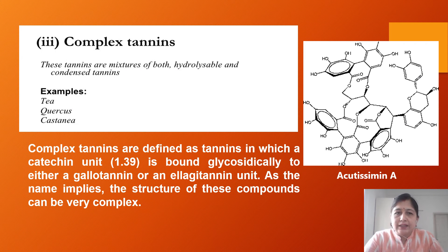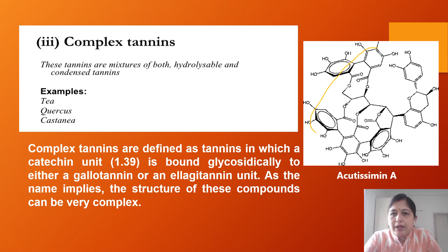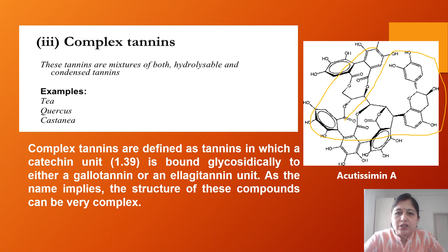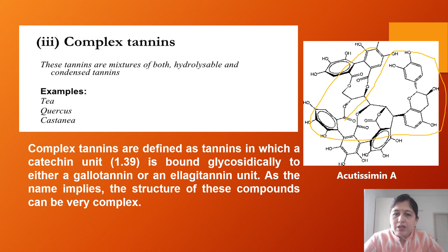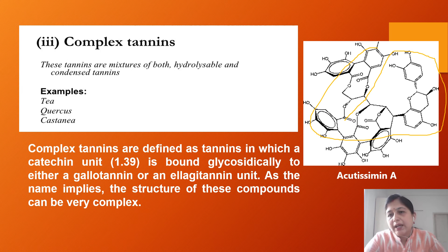Complex tannins are a mixture of both hydrolyzable and condensed tannins. As shown in the structure, many different types of polyphenolic compounds are joined together to form a complex structure. They are defined as tannins in which a catechin unit is bound glycosidically to either a gallotannin or an ellagitannin unit. The structure of these compounds is very complex, and an example shown is acutissimin — a complex tannin.